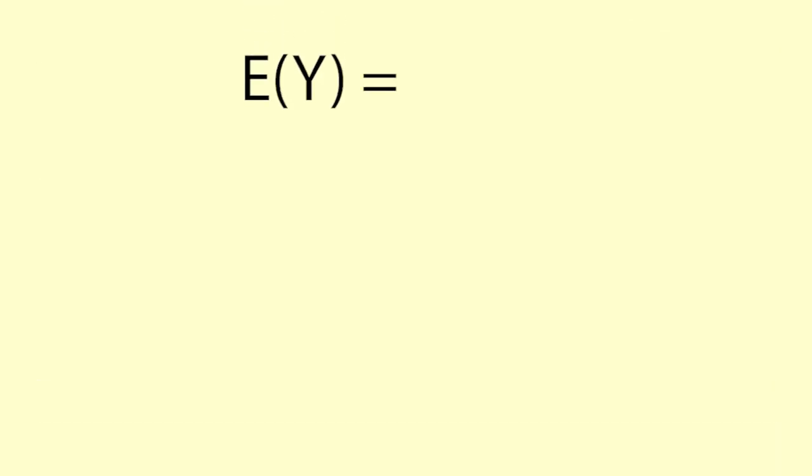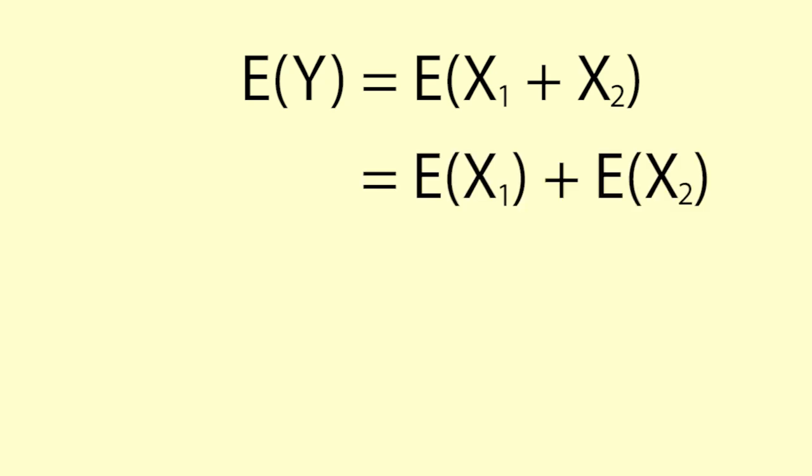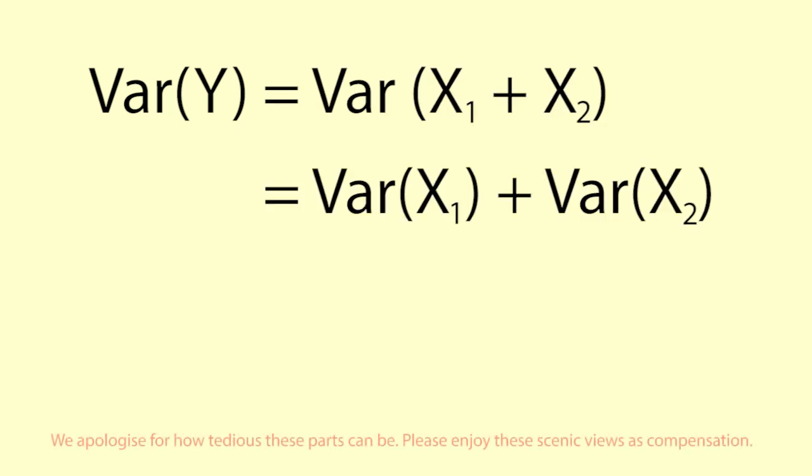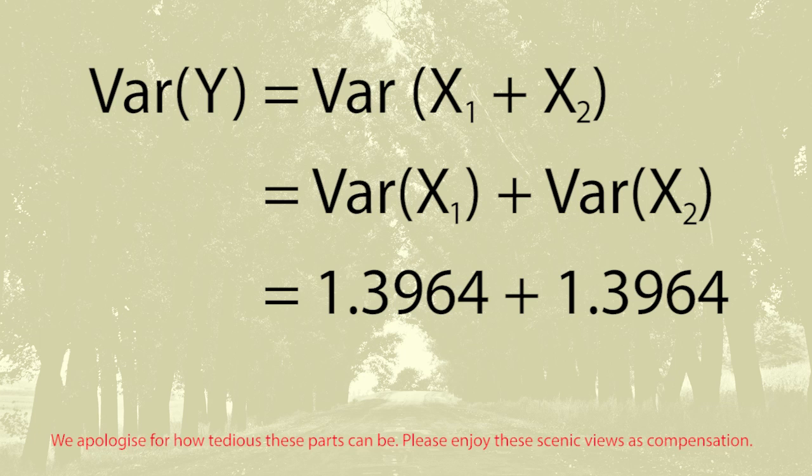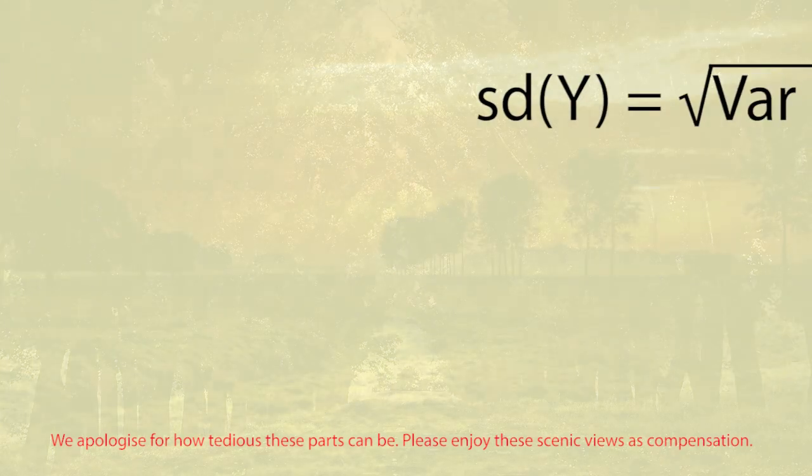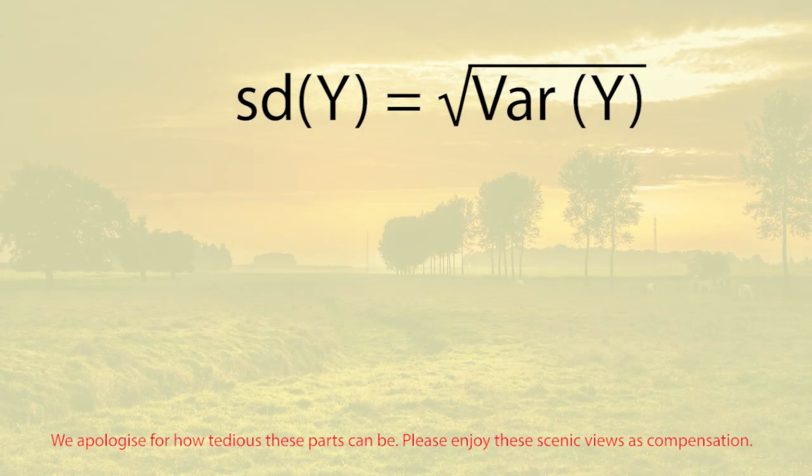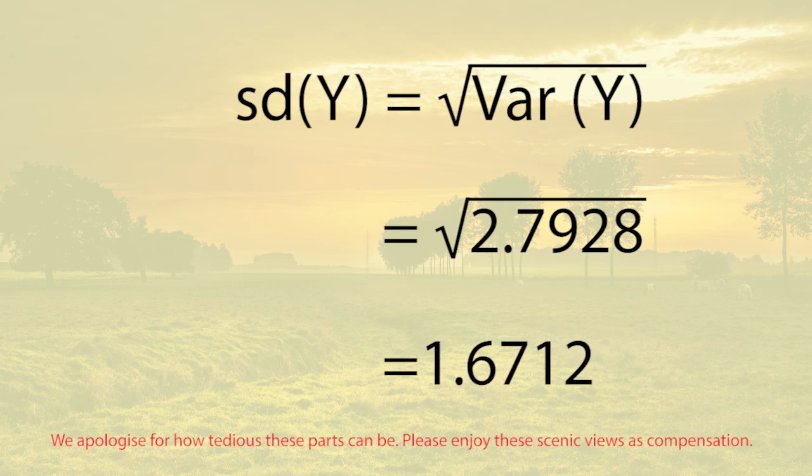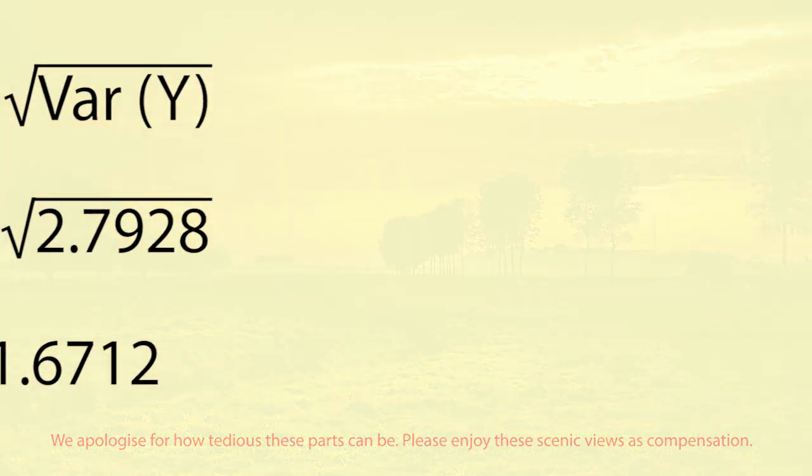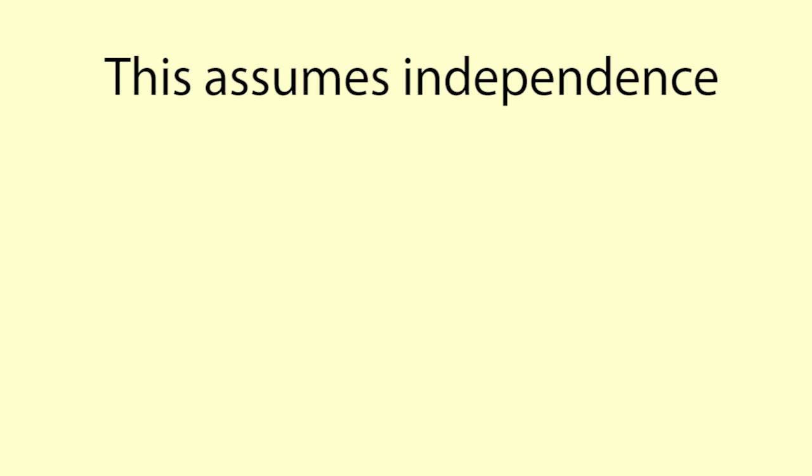The expected value of y equals the expected value of x1 plus x2, which equals the expected value of x1 plus the expected value of x2 equals 1.94 plus 1.94, which equals 3.88. The variance for this distribution of two customers is variance of y equals variance of x1 plus x2 equals variance x1 plus variance x2 equals 1.3964 plus 1.3964 equals 2.7928. So the standard deviation for the distribution for two customers is the square root of that, which equals 1.6712. This formula assumes that the values of the two random variables are independent.